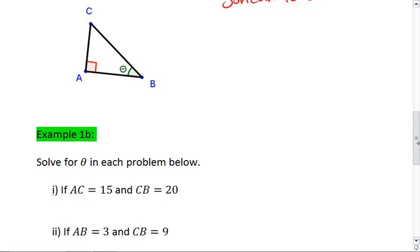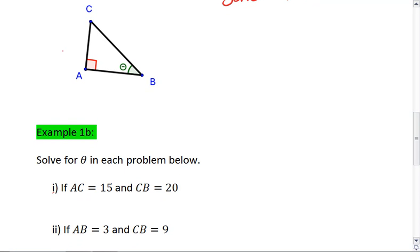Let's look at an example. If AC is 15, and CB is 20, we want to solve for theta. In this case, AC is the opposite side, and BC is the hypotenuse. There we go.